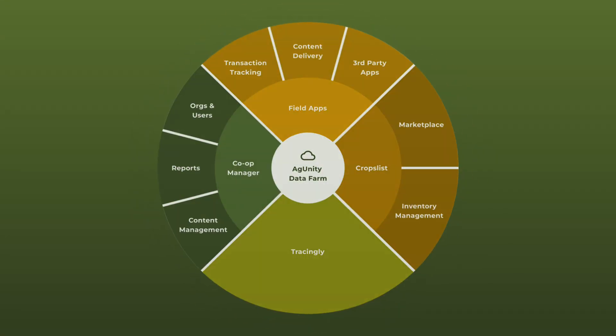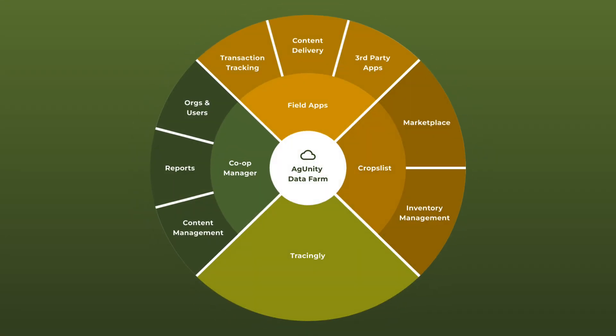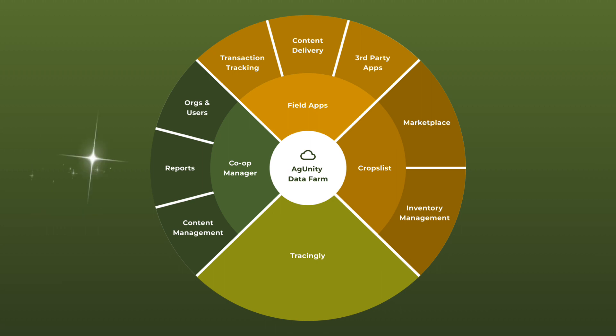Agunity's suite of tools digitizes smallholder agricultural supply chains from farm to market. This results in increased efficiency, transparency, trust, and ultimately opportunity for smallholder farmers. Our new freemium model means that cooperatives can access core features at no cost.